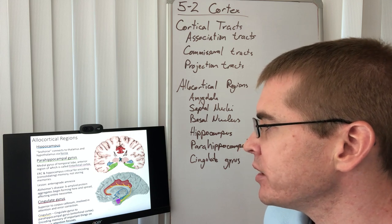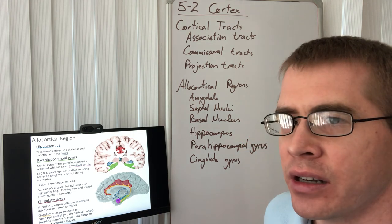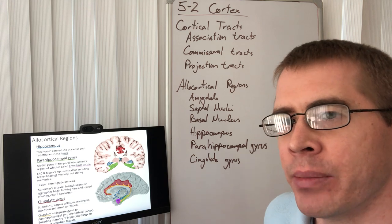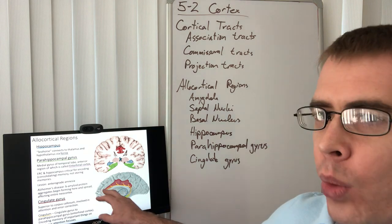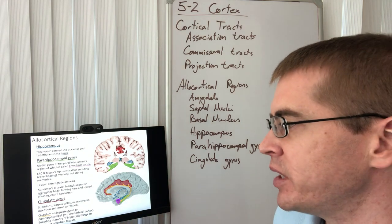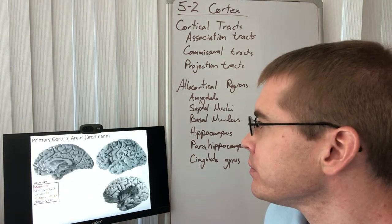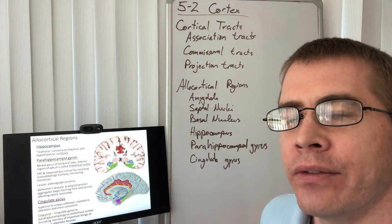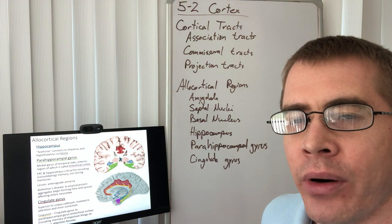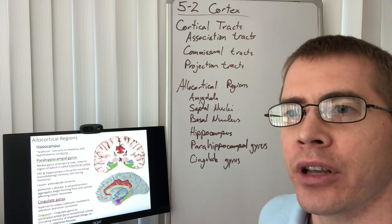And then of course, the cingulate gyrus is connected to things. It's connected to the hippocampus and the parahippocampus so that you can form these memories. And that connection is through a white matter tract called the cingulum. So that's it for this part of 5-2. I'll take a break before going into part three. Thanks for listening.